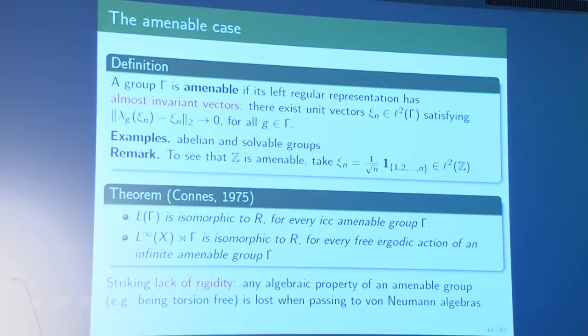This says that amenable groups have a striking lack of rigidity: any algebraic property — being torsion free or finitely generated — is lost when passing to von Neumann algebras. The von Neumann algebra only remembers that the group is amenable, nothing else. Once the amenable case was settled, focus shifted to the non-amenable case, which is far more complex. It became clear that another representation-theoretic property — Kazhdan's property T — is relevant to the classification problem.